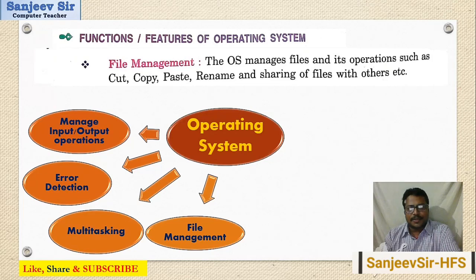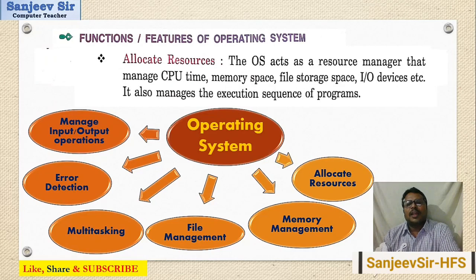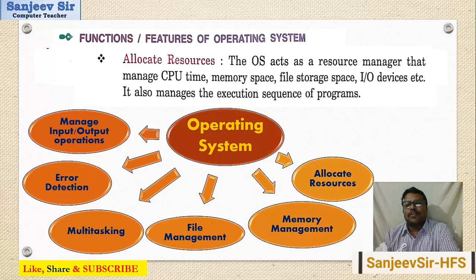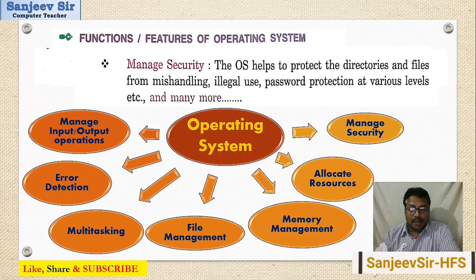Next is memory management. The operating system manages where a file is stored, how much space is available in a particular drive such as C drive, and all related memory management tasks. It manages how to store files, how to allocate memory space, and how to use input devices and resources. Memory security is also handled by the operating system — we can keep password protection on files and folders for protection.